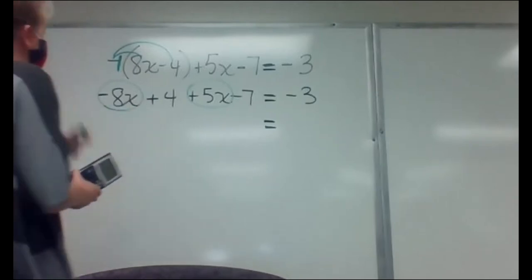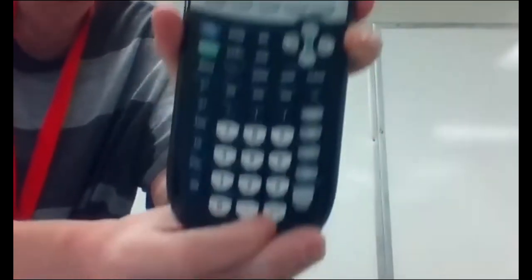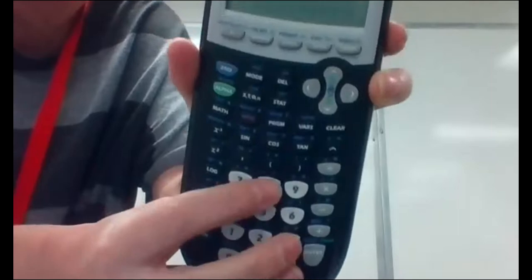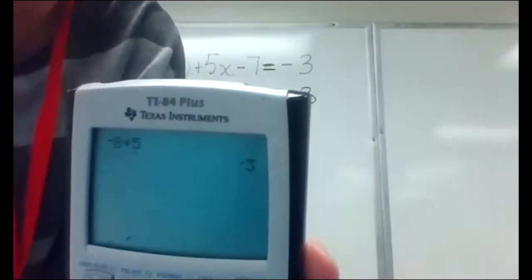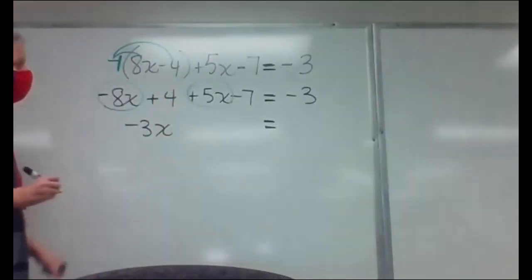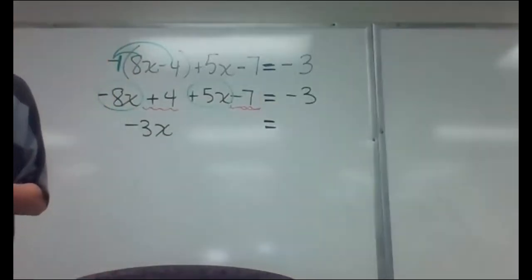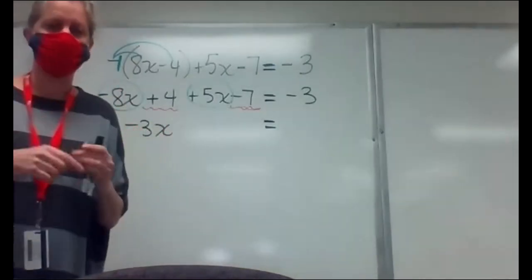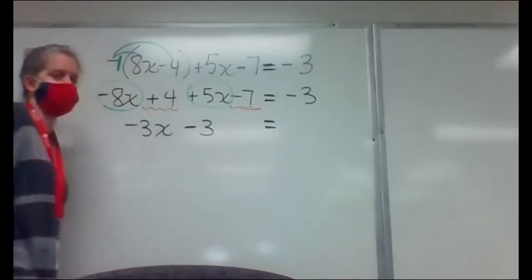How many x's do I have? I've got negative 8 plus 5 — you can type that into your calculator using the negative button below the three. Negative 8 plus 5 gives me negative 3, so all my x's in one basket would be negative 3x. I also noticed the positive 4 and negative 7 are plain numbers — no letters — so I can put those together too. 4 minus 7 gives me negative 3.